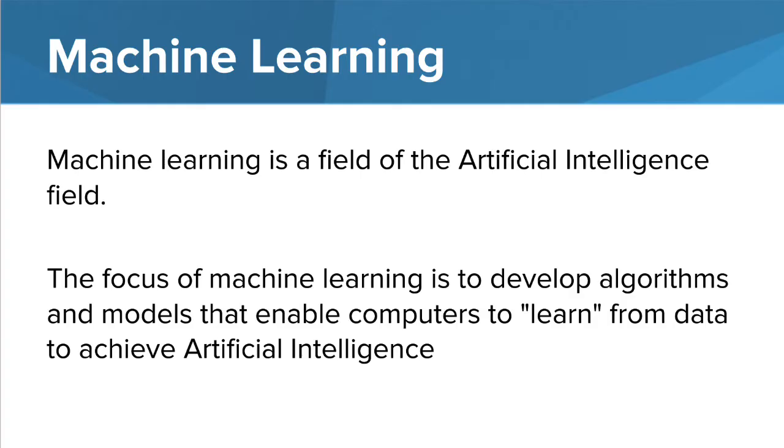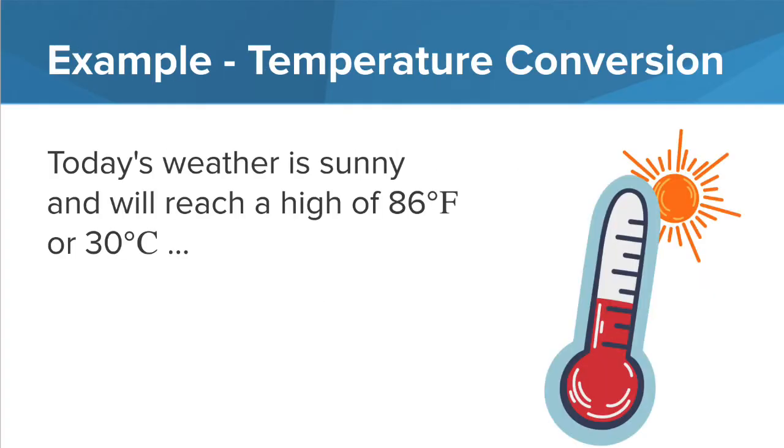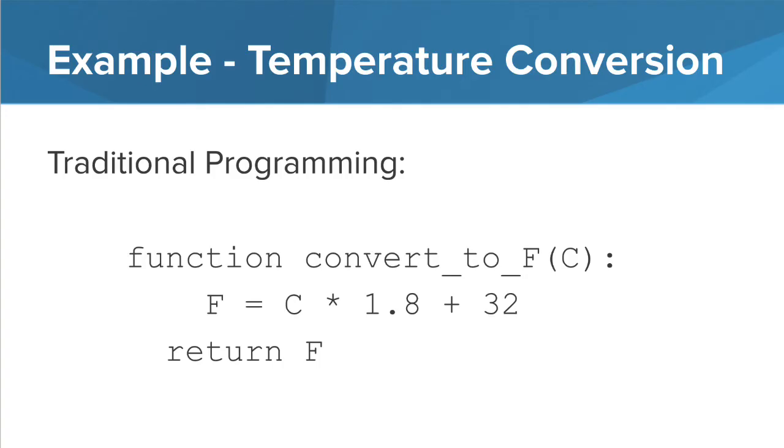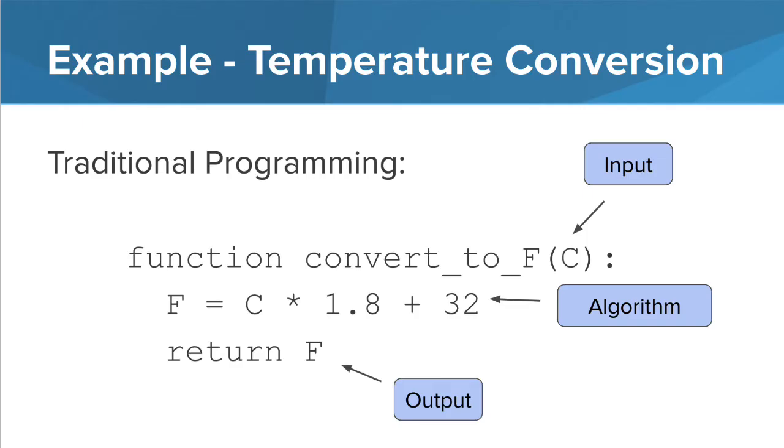Let's look at an example. It looks like it's going to be a nice day today, but how do we know that 86 degrees Fahrenheit is equivalent to 30 degrees Celsius? How can we convert between the two? A traditional program may look something like this. You have a function that takes degrees Celsius as an input and returns degrees Fahrenheit as an output. In this case, the algorithm is a formula that is easily found when looking online. But what if you didn't know that formula?